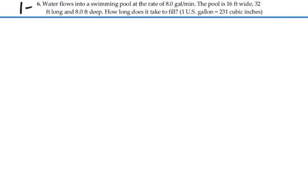Here's problem 1.6. Water flows into the swimming pool at the rate of 8 gallons per minute. The pool is 16 feet wide, 32 feet long, and 8 feet deep. How long does it take to fill? 1 US gallon is 231 cubic inches.